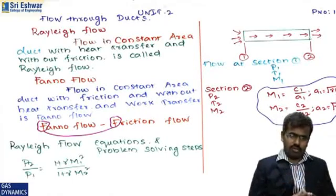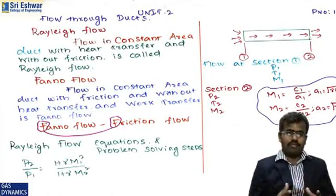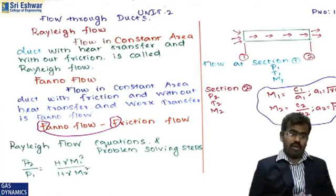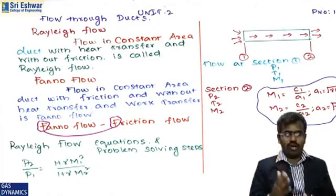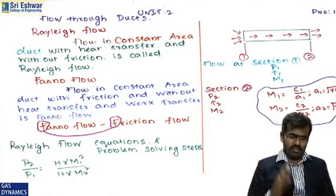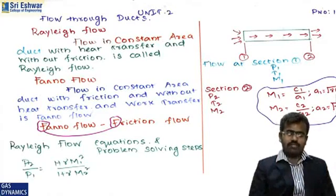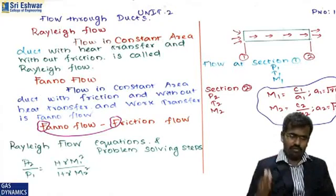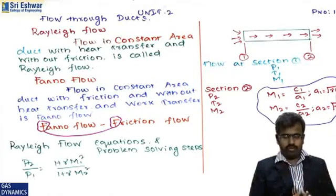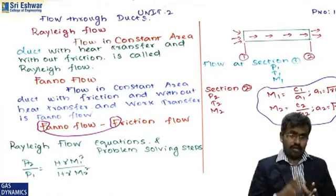We have one formula for Rayleigh flow: p2/p1 = (1 + γM1²) / (1 + γM2²). This is the pressure ratio between section one and section two. For the straight duct, section one has parameters p1, T1, c1, A1, M1, and section two has parameters p2, T2, c2, A2, and ρ2. These parameters are used for solving both Rayleigh and Fanno flow problems.